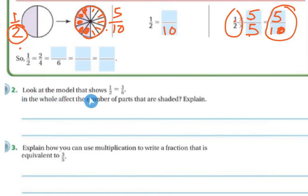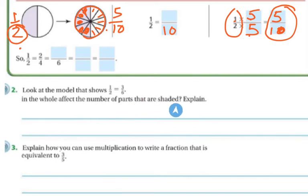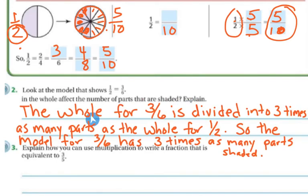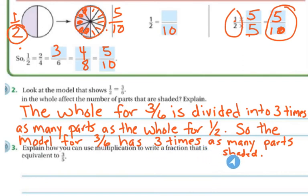Number 2: Look at the model that shows 1/2 and 3/6. Does the whole affect the number of parts that are shaded? The whole for 3/6 is divided into 3 times as many parts as the whole for 1/2. So the model for 3/6 is going to have 3 times as many shaded parts.